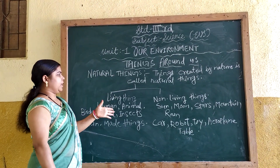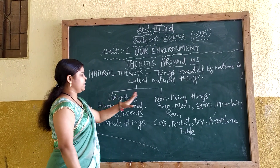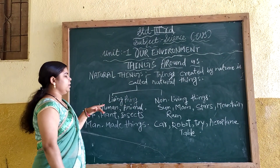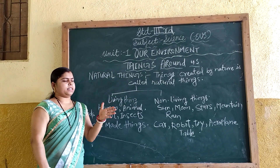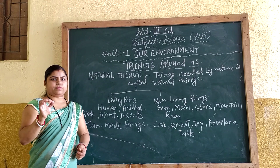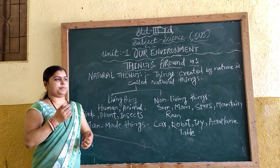We divide natural things into two parts: living things and non-living things. Living things are those which have life — they are called living things.